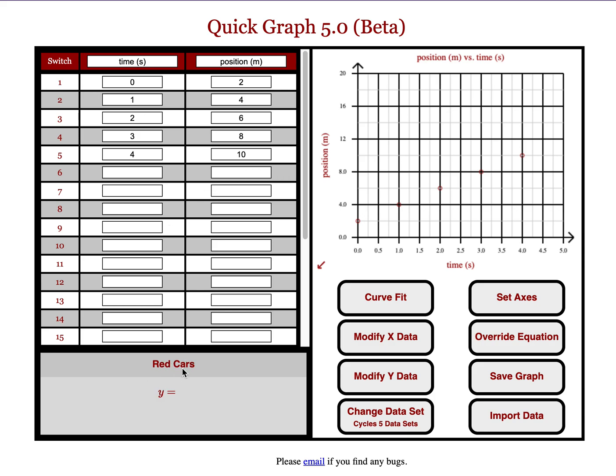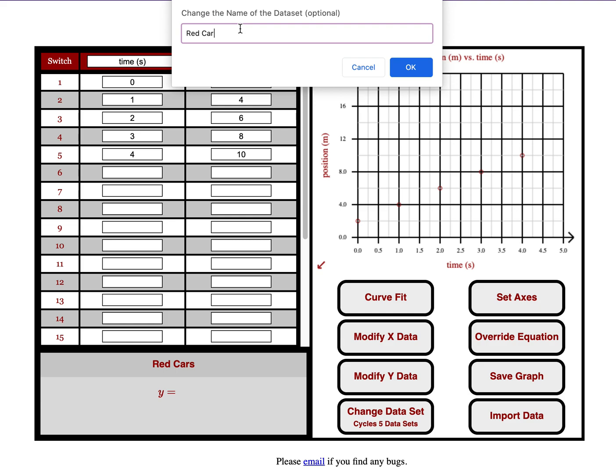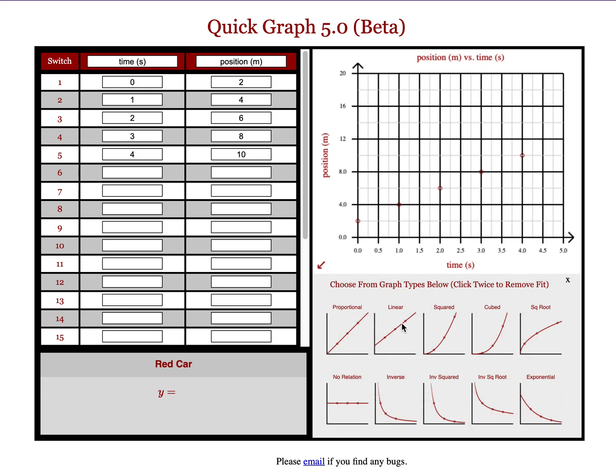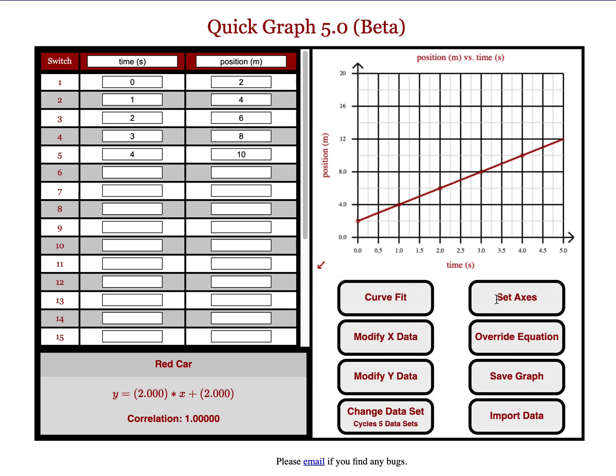So you'll notice this is going to be the red car. Change the name just by clicking on that title. Got all my data entered. I go to Curve Fit, and I pick Linear. Notice I added a Proportional option and a Cubed option this summer. Okay, once I'm done with the red car,